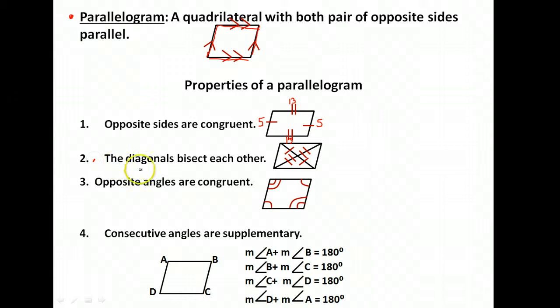Next, the diagonals bisect each other. What does that mean? Well, diagonal is when you draw a line from one corner of the figure to another. That's a diagonal. So I have a diagonal there, and another diagonal here. Bisect each other means they cut each other in half.